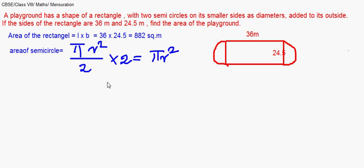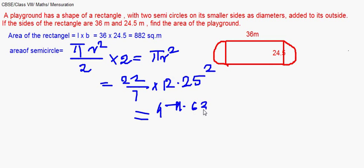So if we substitute it will be 22 by 7. The diameter is 24.5, so the radius will be 24.5 by 2, that's 12.25 whole square or you can keep it as 25 by 2 into 25 by 2. This will give us 471.63 meters square.